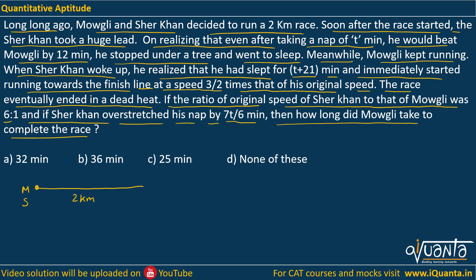When Sher Khan was running, he thought that if he rests for 10 minutes, he would still beat Mowgli by 12 minutes — as written in the problem. But by mistake, he slept for T plus 21 minutes, meaning he slept extra. He overstretched his nap by 70/6 minutes. So he thought he'd sleep for 10 minutes, but slept for T plus 21. That means he overstretched by 21 minutes, and those 21 minutes equal 70/6 minutes of overstretch.